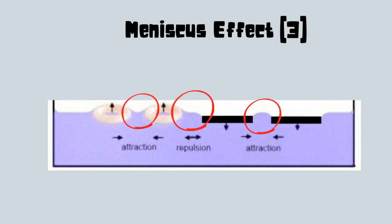Meniscus are formed between straw surfaces due to capillary interaction, and the shape of the meniscus decides whether the straws are going to be attracted towards each other or repelled away.